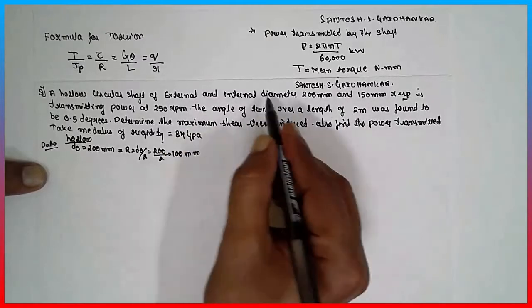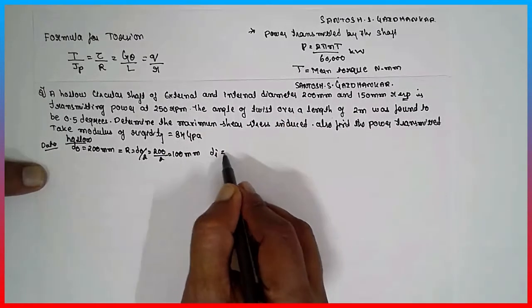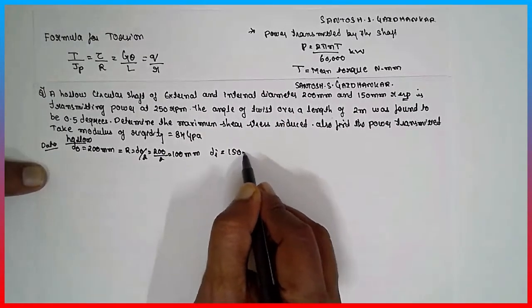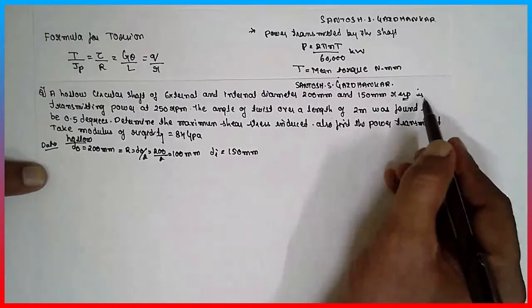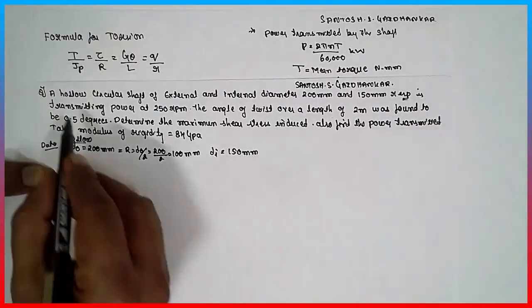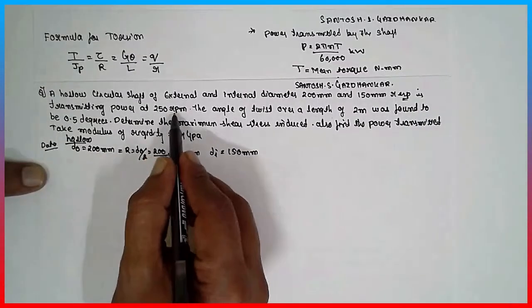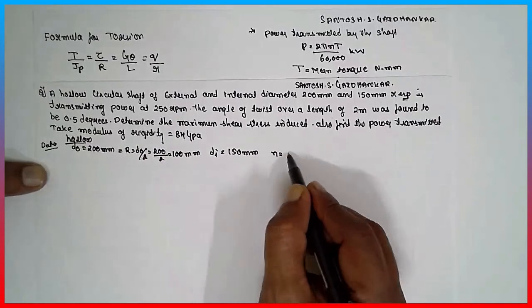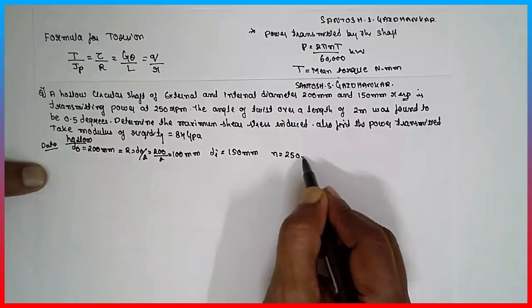And internal diameter D₁, which is 150 mm, respectively is transmitting power at 250 rpm. Small n value is given 250 rpm.